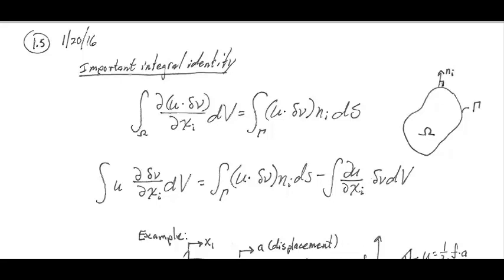There's a unit normal pointing outward on the surface. Let's say we have some variable u and we're taking this variation on nu. But you can consider this whole thing as some function. And so what we're interested in is the gradient of this function over the whole volume.